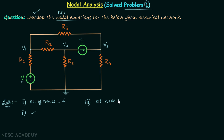At node one we will develop the KCL equation. We will first mark the currents in different branches connecting at this particular node. The current in this branch is I1, current in this branch is I2, and current in this branch is I3. We are considering V1 to be the largest voltage, therefore we have taken the direction of currents as outgoing. According to KCL the sum of outgoing currents must equal the sum of incoming currents. Here there are no incoming currents, so the sum of incoming currents equals zero.